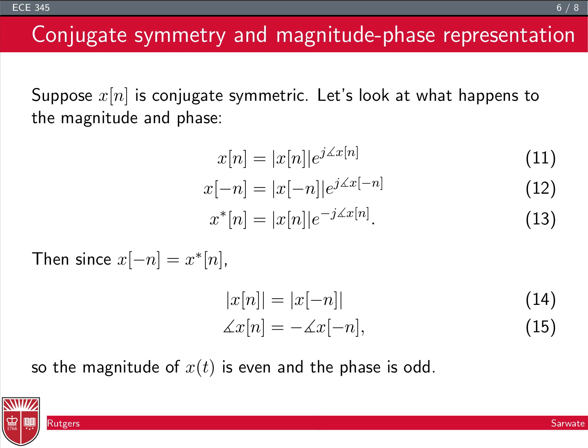Now let's look at the magnitude-phase representation for a discrete-time conjugate symmetric signal x(n). We write x(n) in terms of its magnitude and phase, and likewise x(−n). For x*(n), the magnitude stays the same but the phase switches sign — we get a minus sign in the exponent of the phase term.